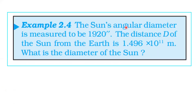The sun's angular diameter is measured to be 1920 seconds. The distance d of the sun from the Earth is 1.496×10¹¹ meters. What is the diameter of the sun?